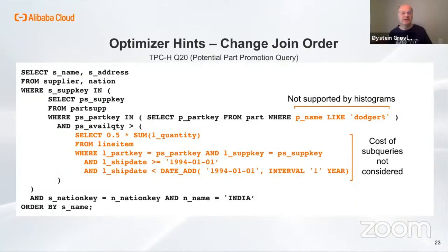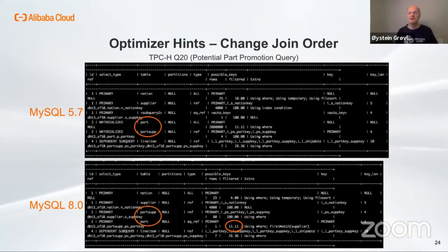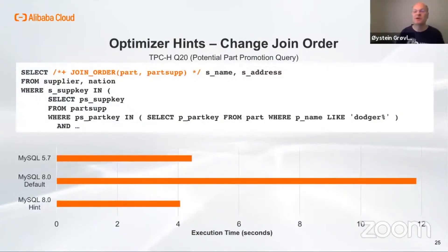For query 20, which was almost three times slower in MySQL 8 than in 5.7, the problem is that the optimizer picks an inefficient join order. The root cause is that we do not have good estimates of the filtering effect of the predicate on p_name, since the histogram implementation does not support estimates for LIKE prefixes. What makes it even worse is that the cost of subqueries is not considered, so the cost of a join order where the subquery executes before the filtering of parts is greatly underestimated. Looking at the query plans, in 5.7 parts comes before partsupp, while in MySQL 8 the order is reversed. The filtering estimate for part is 11%, while in reality it's close to 1%. We can fix the performance of query 20 by adding a join order hint so that parts comes before partsupp, resulting in an execution time that is much better.